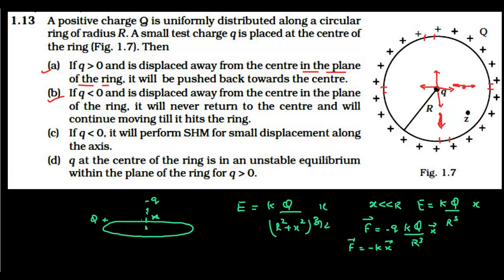Physically, when the negative charge is displaced along the axis, each ring element attracts it, and the resultant force is towards the center. Due to inertia it overshoots and oscillates back and forth. This confirms the negative charge displaced perpendicular to the plane of the ring is in stable equilibrium and performs SHM. Option C is correct.